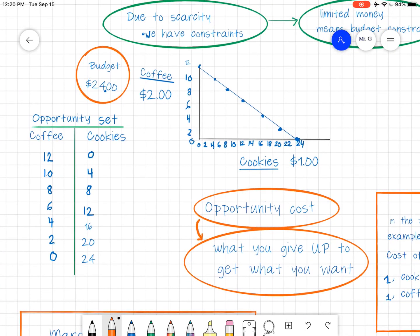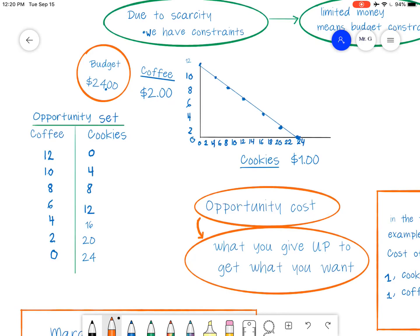And so I have my scenario here, you can see it. On the left side, you see my opportunity set right there. Coffee and cookies. You see my graph, you see it says coffee $2, cookies $1, budget $24 in orange. And we're going to be able to look at the graph and the opportunity set, and we'll be able to figure things out. So the first place to start is with the opportunity set. The opportunity set tells you what is possible.